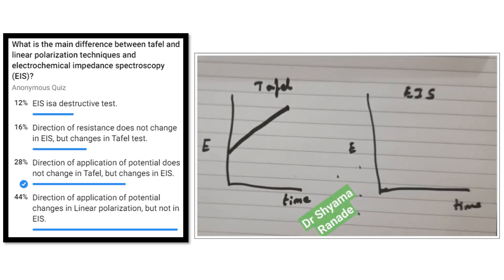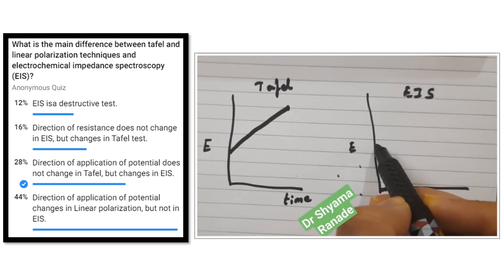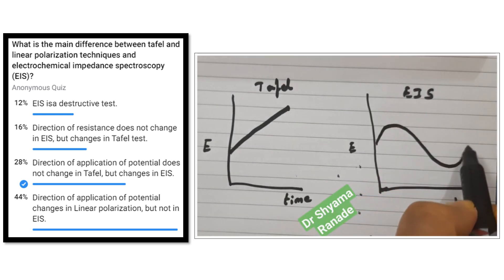On the other hand in EIS the change in potential happens in the positive as well as the negative direction.